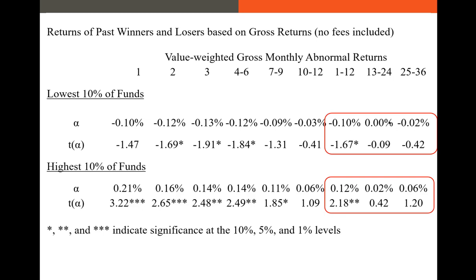Notice that the funds that perform the worst show very limited, very weak statistical significance that they will underperform over the next year, and there's no evidence they'll underperform in their second or third year after portfolio formation. However, the funds that perform the best — the highest performing 10% of funds — absolutely have better performance over the next year, and that's statistically significant at the 5% level. So 12 basis points a month — that's pretty significant.